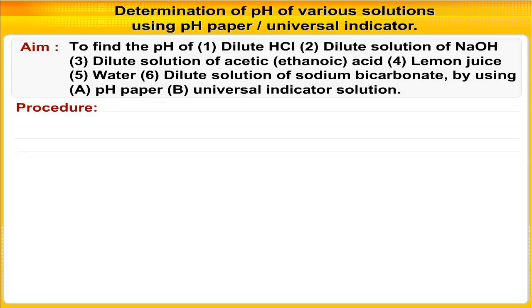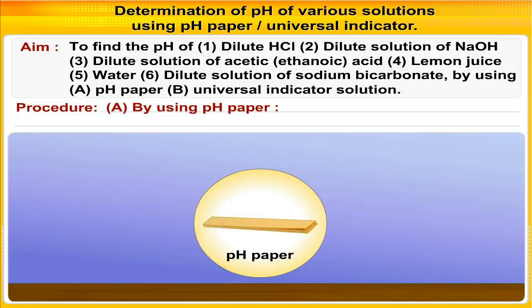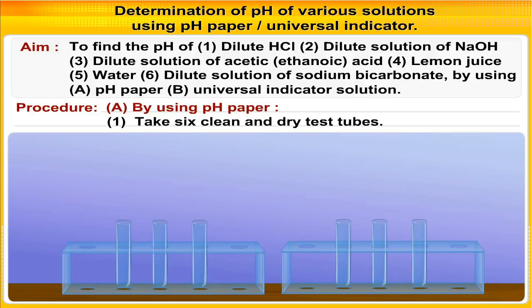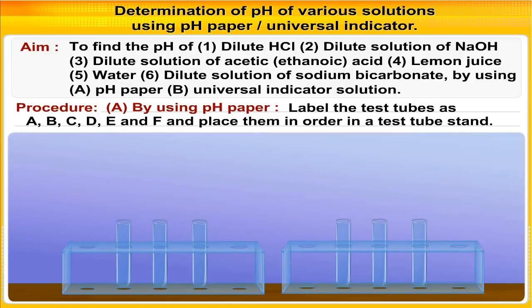Procedure A: By using pH paper. Step 1 — take 6 clean and dry test tubes, label the test tubes as A, B, C, D, E, and F, and place them in order in a test tube stand.